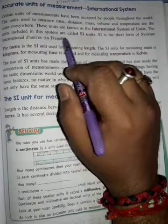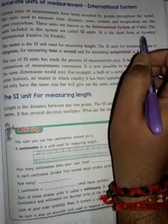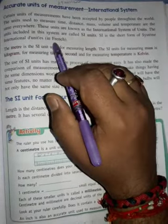The units included in this system are called SI units. SI is the short form of Système International, the international system of units in French.